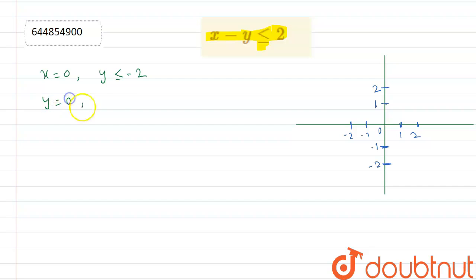Now here when we put y is equal to 0, we get x less than or equal to 2. So now here we get the coordinates like 0, minus 2 and here we get 2 and 0.